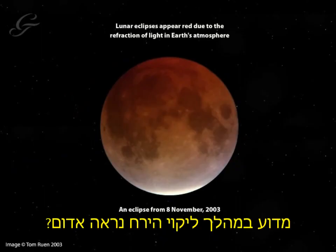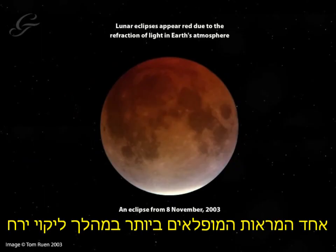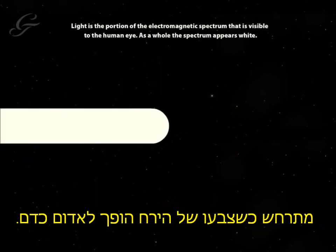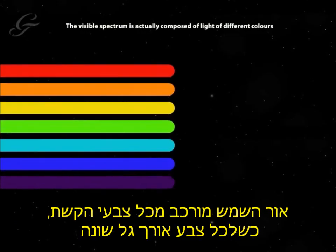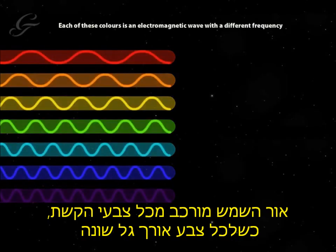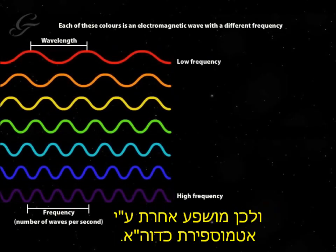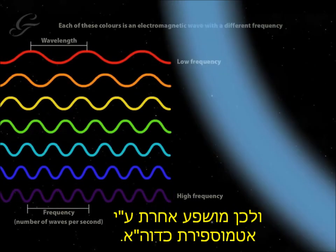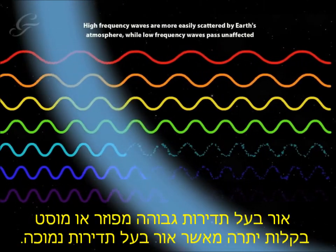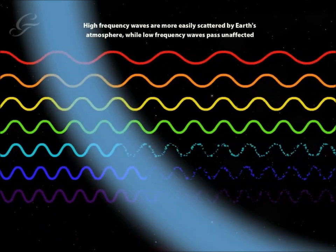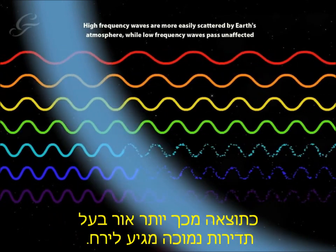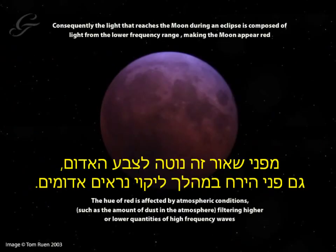Why does an eclipsed moon appear red? One of the most spectacular features of a lunar eclipse is when the moon turns blood red. This is a consequence of sunlight interacting with the Earth's atmosphere. Sunlight is made up of all the colours of the rainbow; each colour has a different wavelength, which means it is affected differently by the atmosphere. High-frequency light is scattered, or deflected, more easily than low-frequency light. As a result, more low-frequency light reaches the moon, and because low-frequency light is reddish, it makes an eclipsed moon appear red.